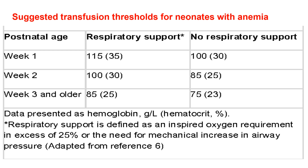The suggested transfusion thresholds for neonates with anemia depend on age, severity of the hemoglobin or hematocrit, and whether the patient has respiratory support or not. During the first week of life, if the patient is on respiratory support, hematocrit less than 35% and hemoglobin less than 11.5 g/dL is the cutoff for transfusion. If not on respiratory support, hemoglobin less than 10 g/dL and hematocrit less than 30% is used. In the second week, for the respiratory support group, hemoglobin less than 10 g/dL and hematocrit less than 30%, and for those not on respiratory support, hemoglobin less than 8.5 g/dL and hematocrit less than 25%.